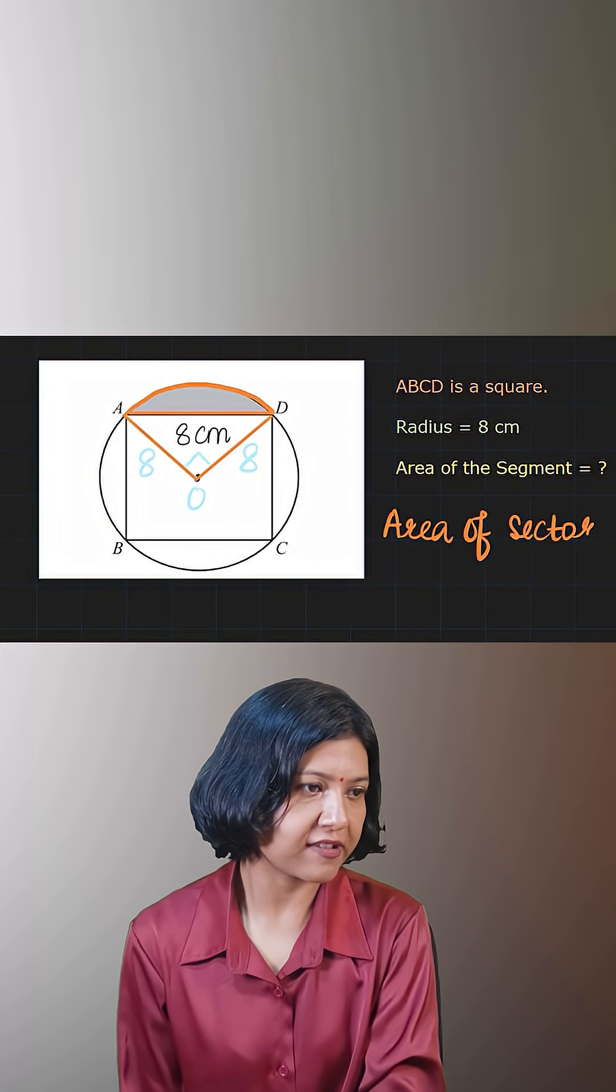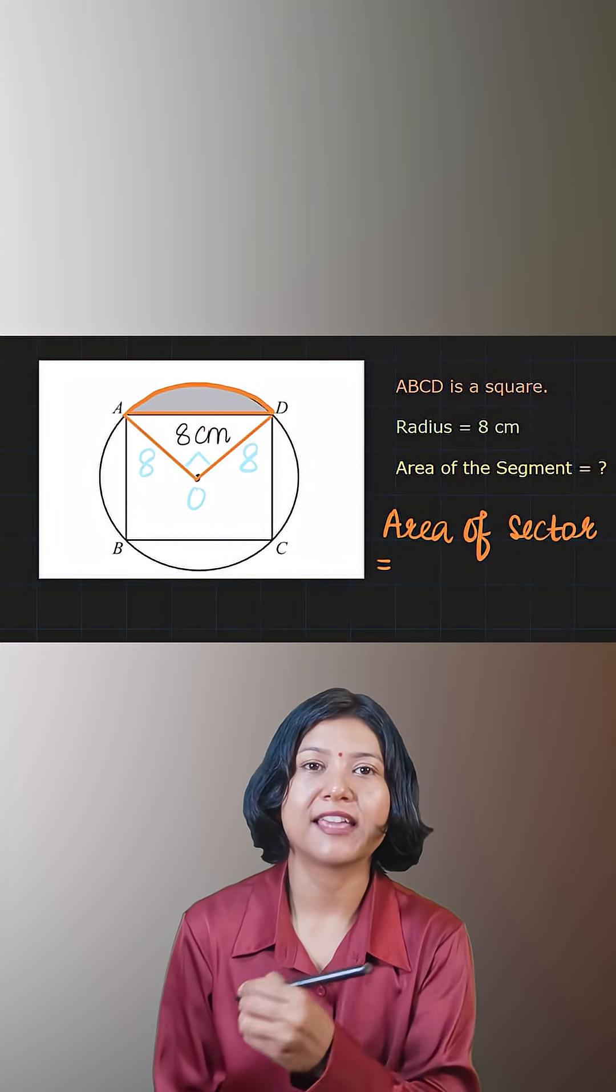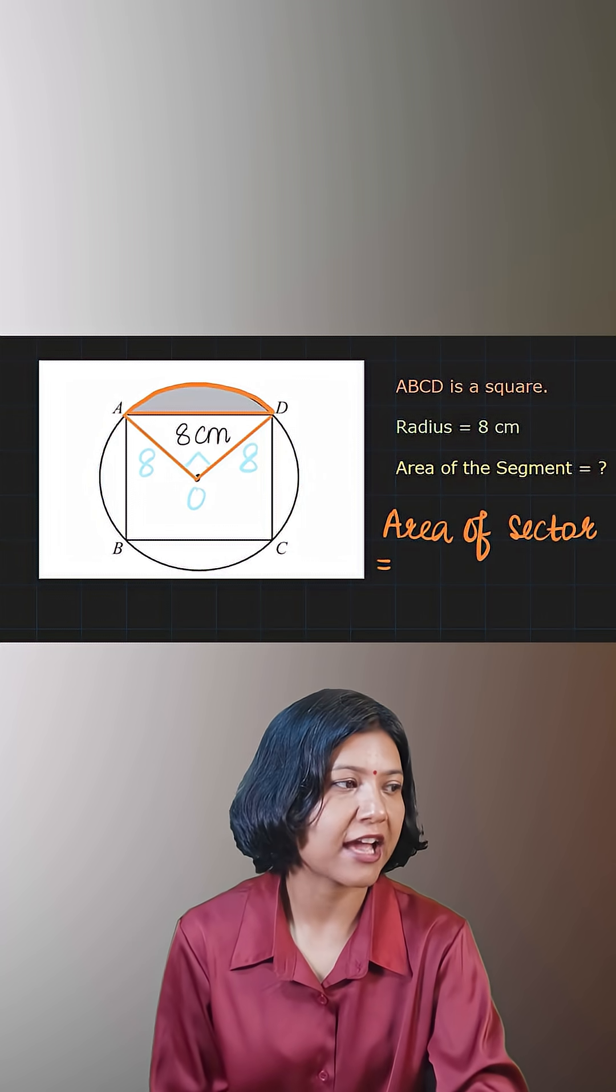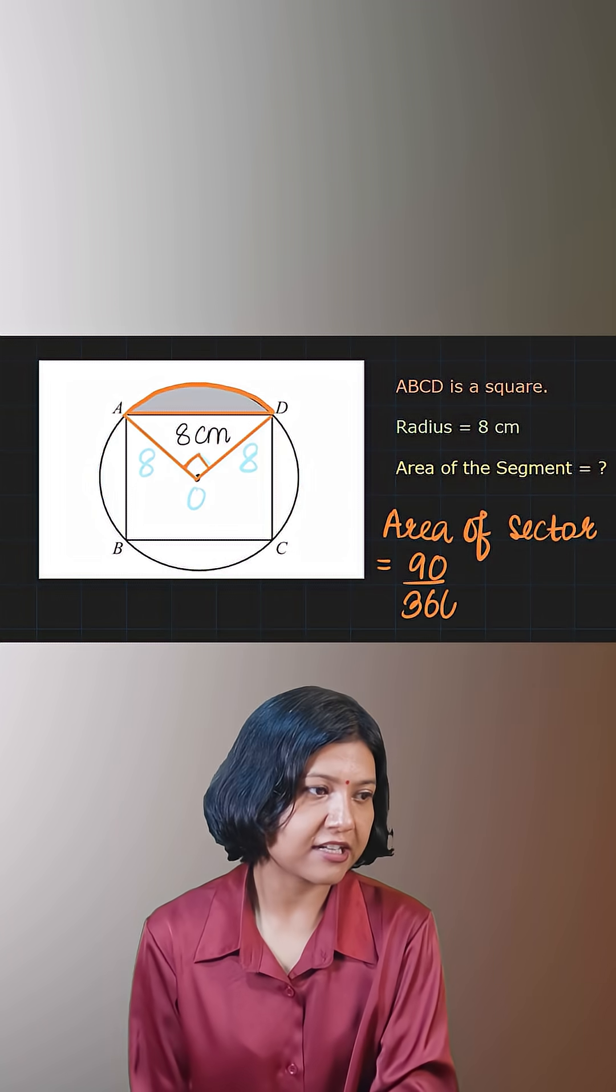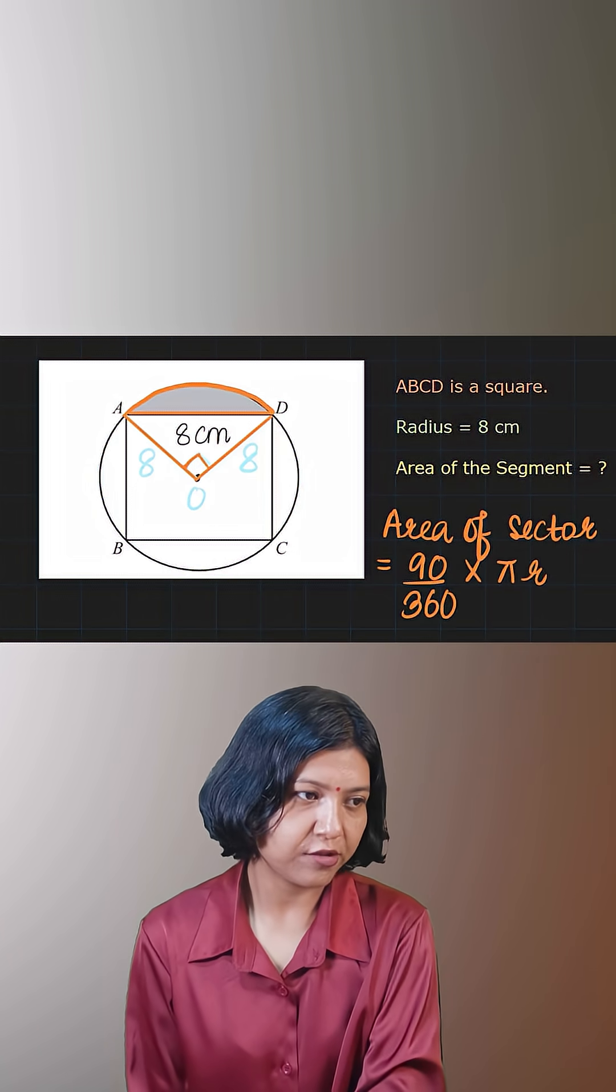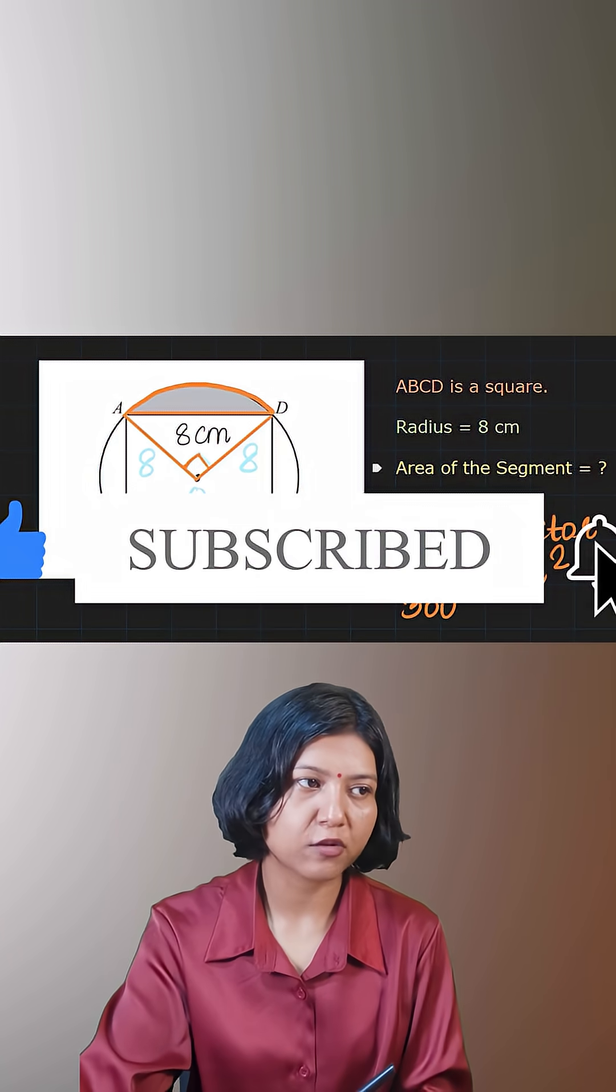What will be the area of sector here? Understand, sector is always decided by the angle made at the center, and I told you the angle here is 90 degrees. 90 out of 360, correct. So that times pi r squared.